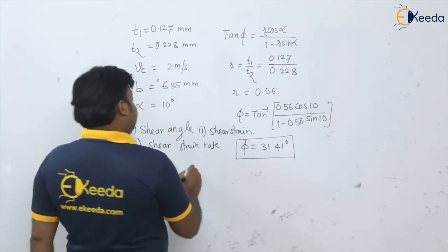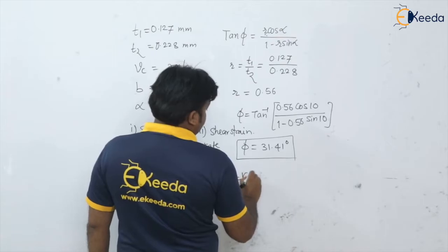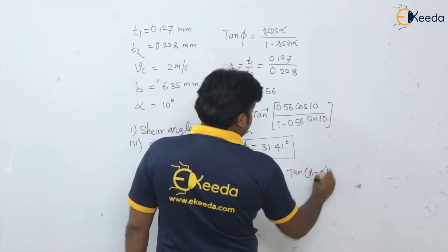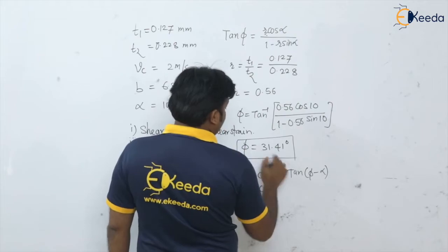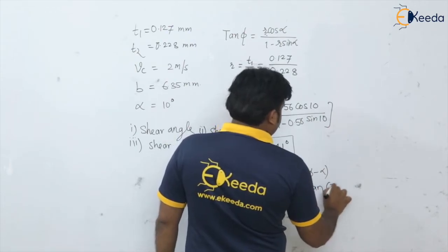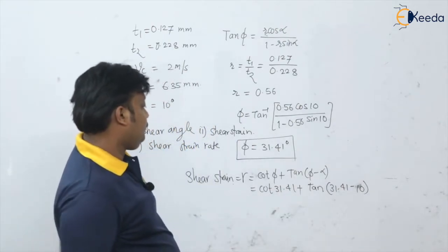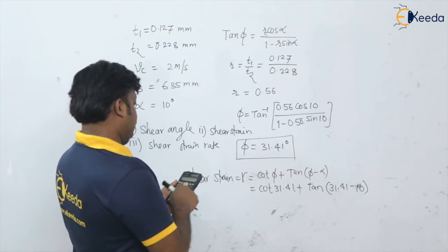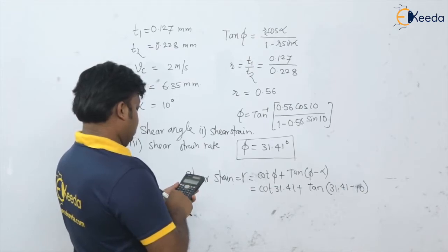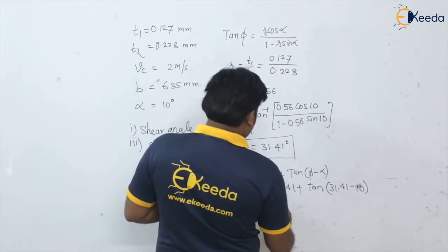Next, the shear strain. The formula is: γ equals cot(φ) + tan(φ − α). Substituting φ = 31.41° and α = 10°: γ equals cot(31.41°) + tan(21.41°), which gives γ ≈ 2.03. This is the shear strain.